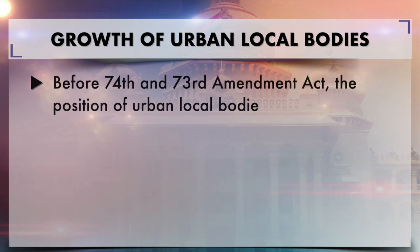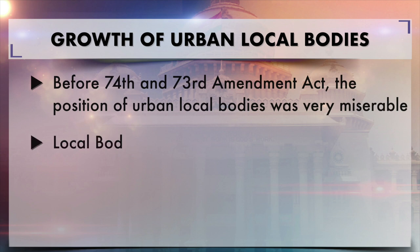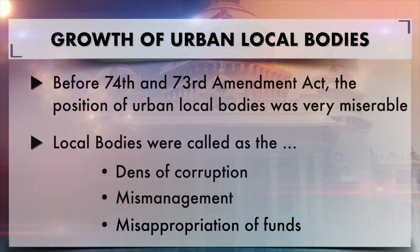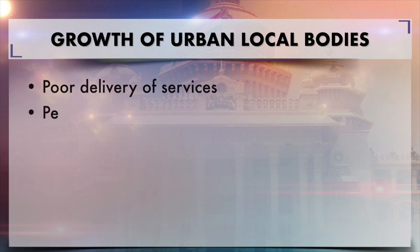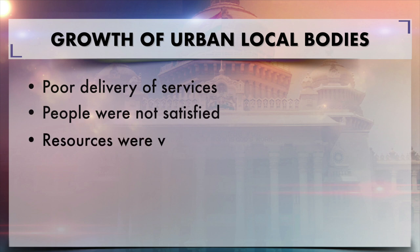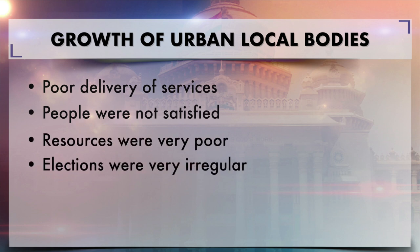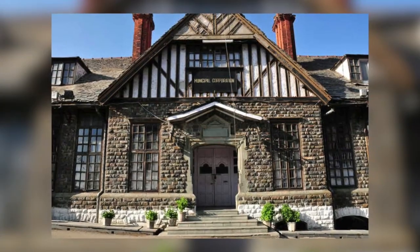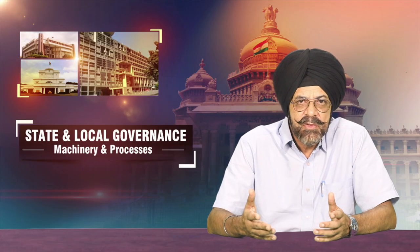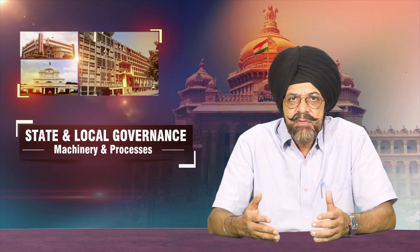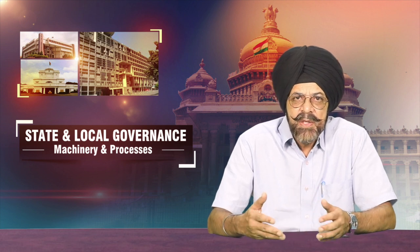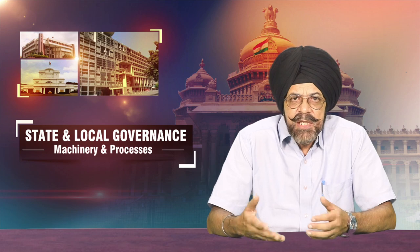Before that, the position of urban local bodies was very miserable. These were called dens of corruption — there was mismanagement, misappropriation of funds, and poor delivery of services, and people were not at all satisfied. Their resources were very poor and their elections were very irregular. For instance, in Himachal Pradesh for 20 years there were no elections for municipal bodies, and similar cases existed in other states. Elections were held after very long gaps and these bodies were virtually made undemocratic.